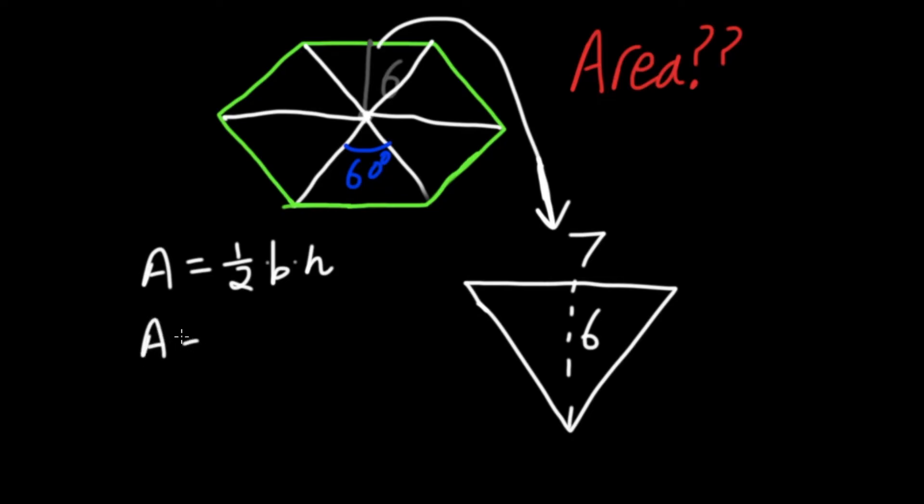So we have area is equal to one half, base which is 7, times our height which is 6. That gives us our area to be one half times 7 times 6, which is 42. And one half of 42 is 21. Meaning the area of this triangle is 21.